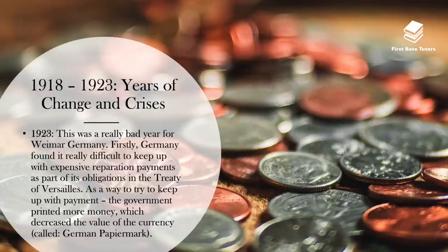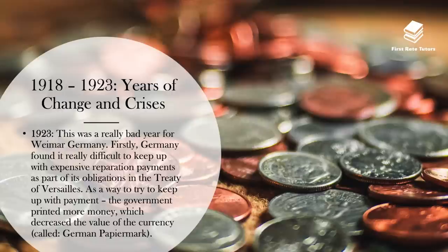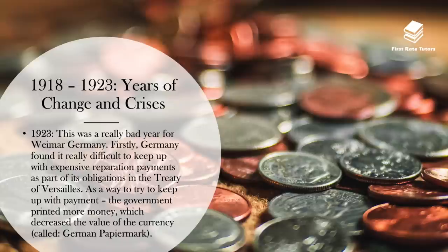In 1923, this was essentially the nadir of Weimar Germany — the worst time. Germany found it really difficult to keep up with its expensive reparation payments, which are part of its obligations in the Treaty of Versailles. Within the Treaty of Versailles, Germany not only had to accept the war guilt clause — that they'd started the First World War — but as a result, they also had to accept paying the allied countries around £6.6 billion in reparation payments, which is a huge amount of money. Germany, which was also war-torn, found this really difficult and it missed some payments. As a way to try and keep up with these payments, the government in a panic printed more money, which ironically reduced the value of the currency, which at the time was called the German Papiermark.